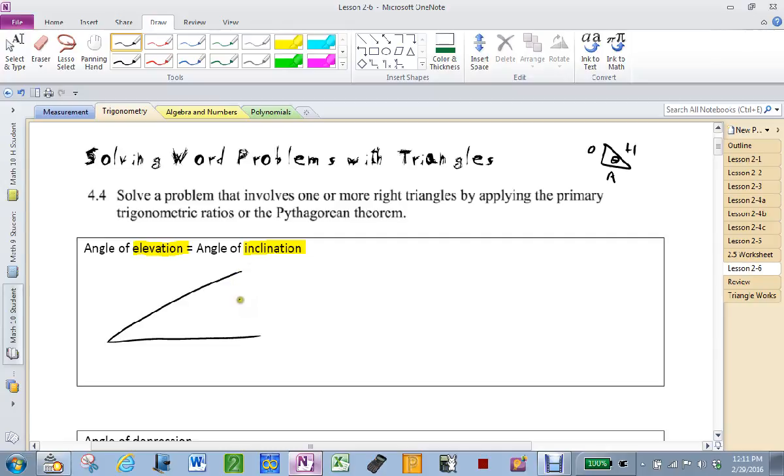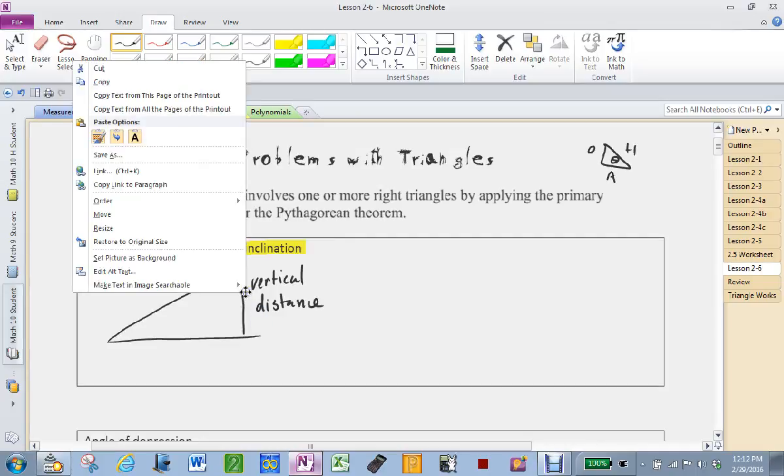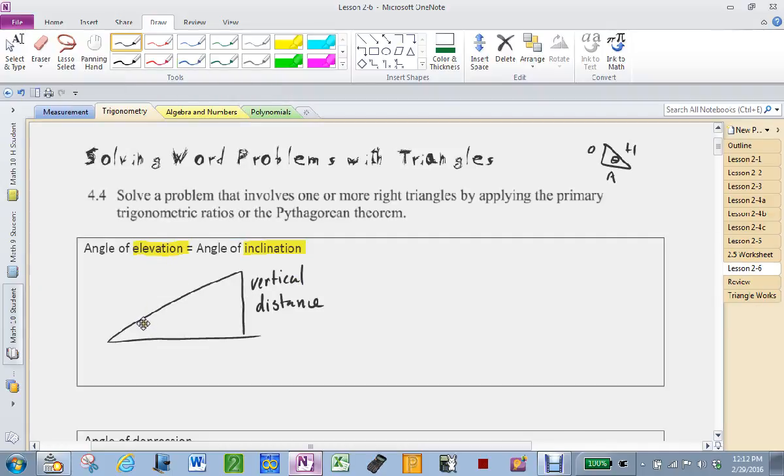Now, in real life, in reality, this is a vertical distance, isn't it? But on our piece of paper, it's not vertical, technically, is it? Because the paper's flat. Understand? But we have drawn it upwards. So that makes this our angle of elevation or inclination. It means the same thing.